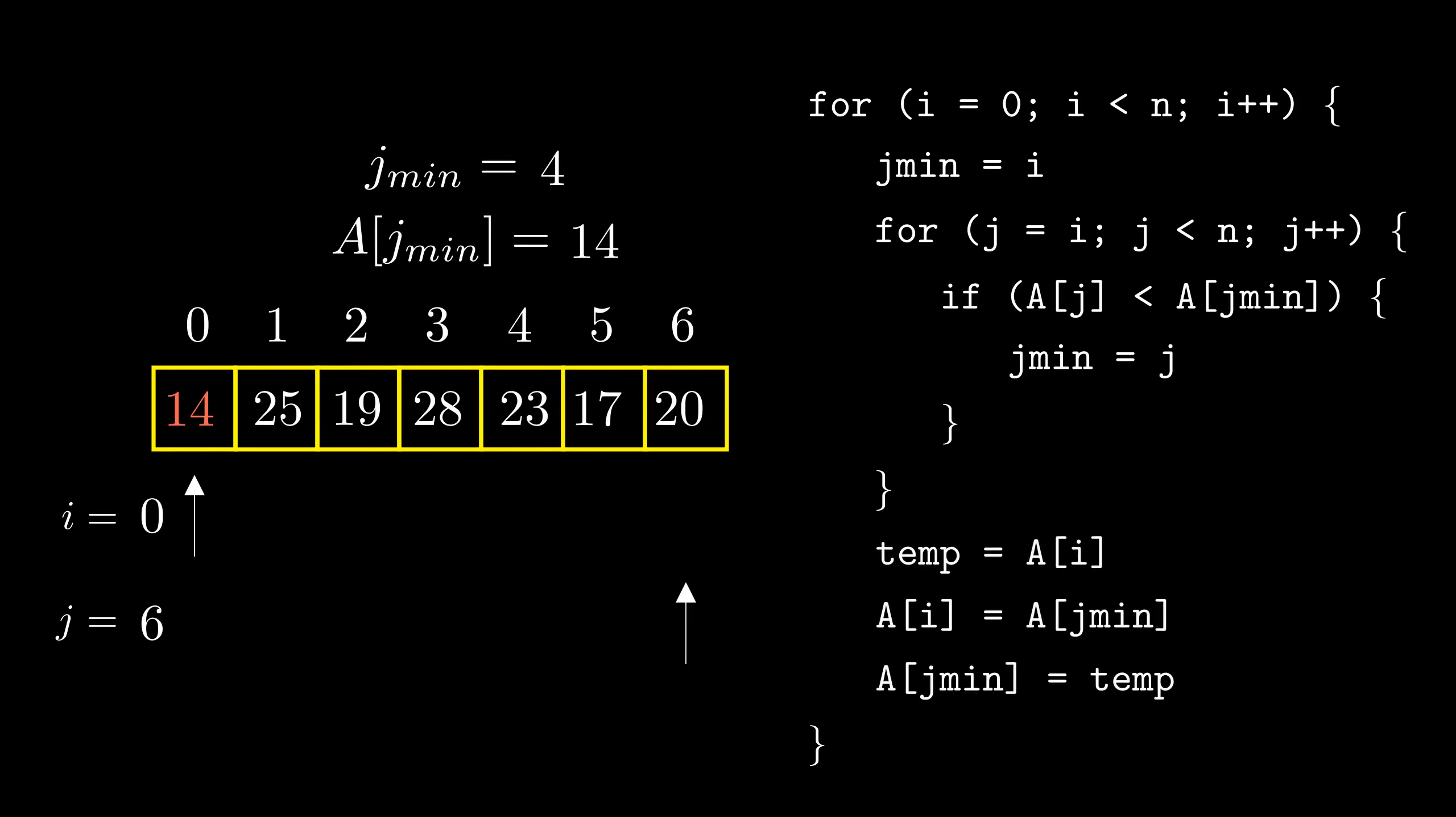These three lines of the code swap the elements at location i and location jmin. As an aside, do you think we can do a swap without the temporary variable? Mention it in the comment and let me know what you think. Okay, now that we have got the first element correct,